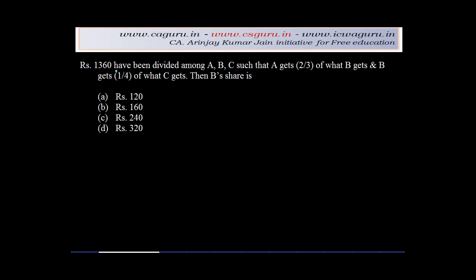Rupees 1,360 has been divided amongst A, B and C such that A gets 2/3 of what B gets and B gets 1/4 of what C gets. Then B's share is, and there are four options.